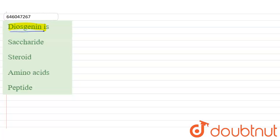So basically, this diogenin is a plant steroid. It is a plant steroid. Now it is a product of...